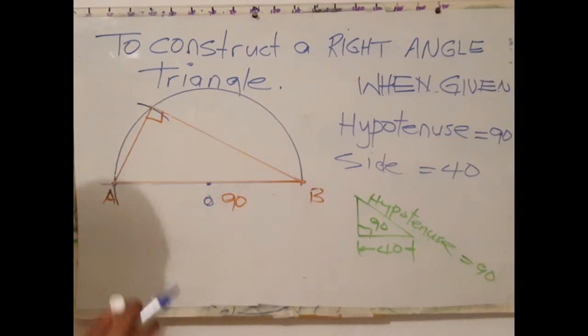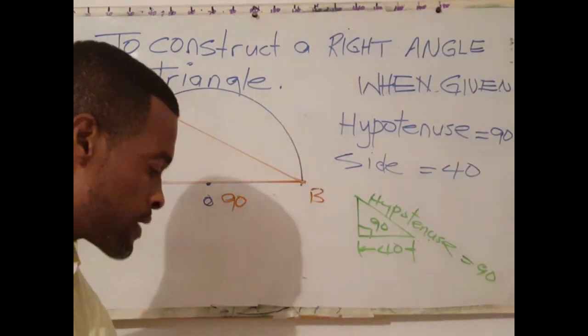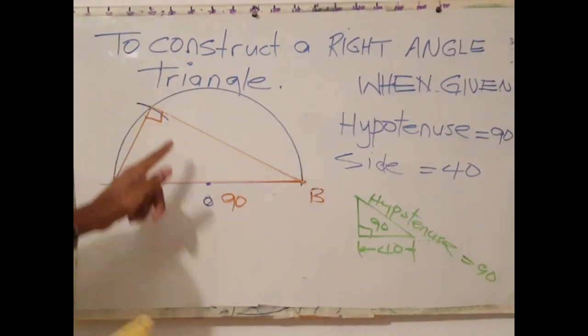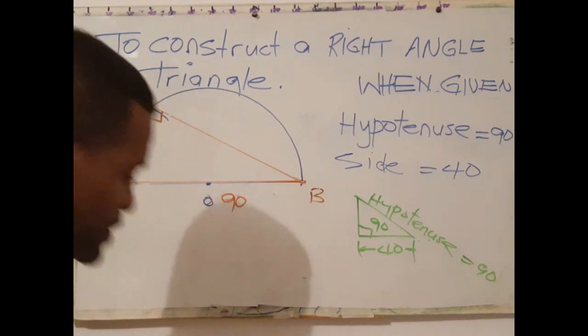It's important to know that, as I was explaining earlier, any triangle that is formed within this semicircle, the angle will always be 90 degrees. Please make note.